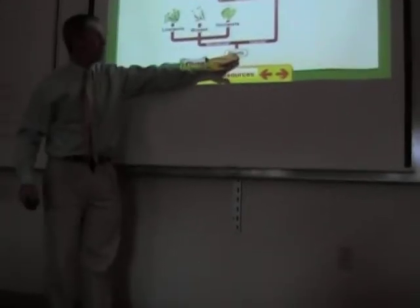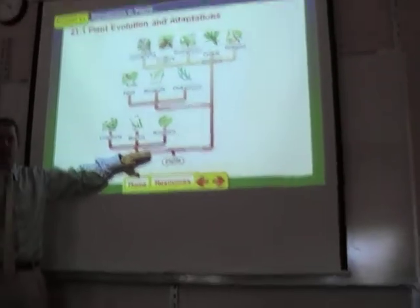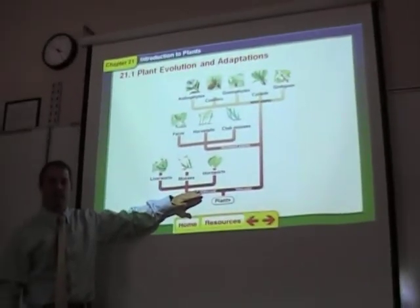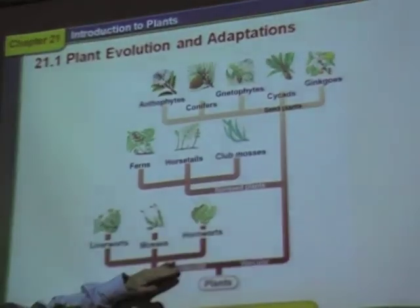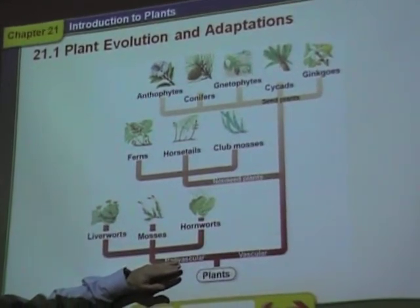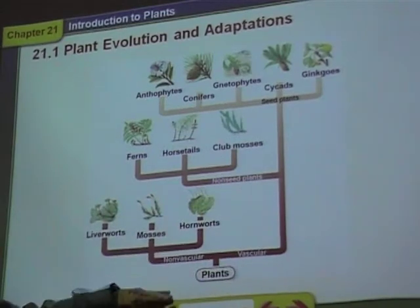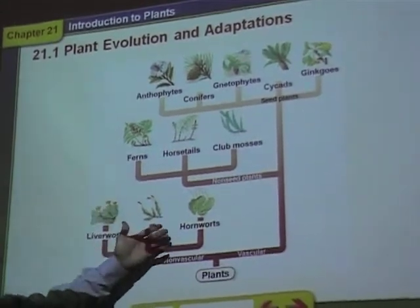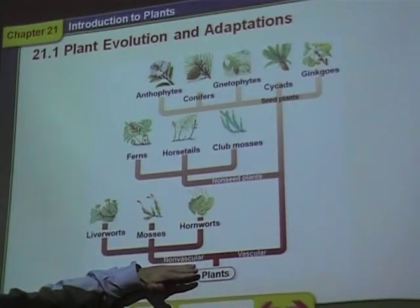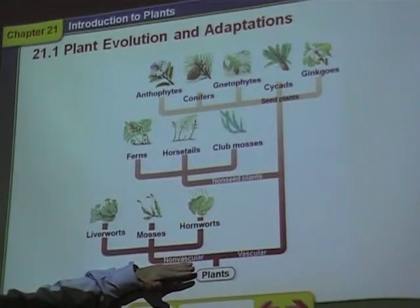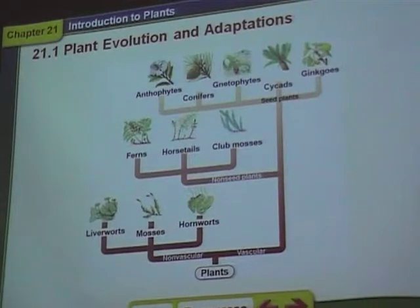Plants evolved. The first plants were non-vascular. The first types of plants were non-vascular. They include liverworts, mosses, and hornworts. We learned about those. When we say non-vascular, we mean that they don't have any tissue for transporting materials up and down the plant.